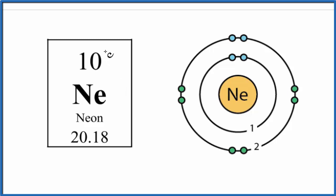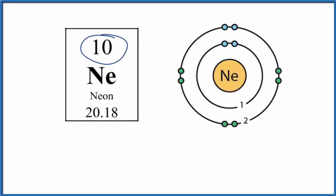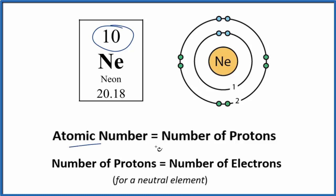Neon has the atomic number of 10, and what that means is that neon is going to have 10 protons. Atomic number, that's the number of protons. So neon has 10 protons in the nucleus.